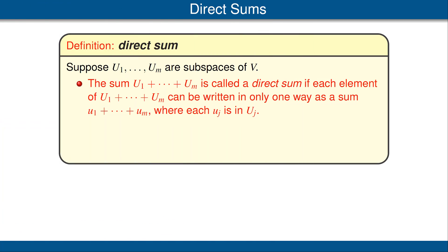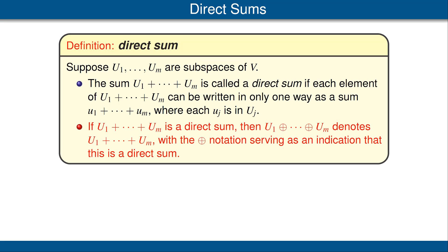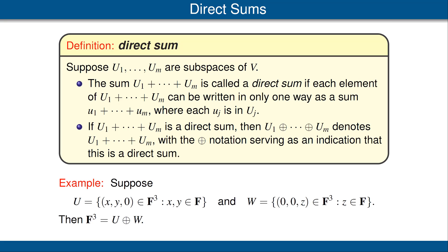Now we turn to the notion of direct sum, which will be important later in the course. Suppose we have subspaces U₁ up to U_m of V. Their sum is called a direct sum if each element in the sum can be written in only one way as a sum. If we do indeed have a direct sum, we use the notation of a plus sign with a circle around it to indicate that. For example, suppose U is the set of all vectors in F³ whose third coordinate is 0, and W is the subset of F³ consisting of all vectors whose first two coordinates are 0. Both U and W are subspaces of F³, and their sum is actually a direct sum — we can write each element in only one way as something in U plus something in W.